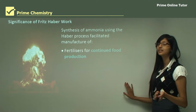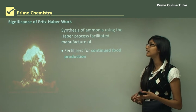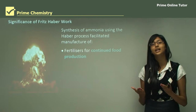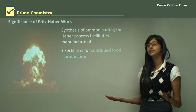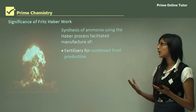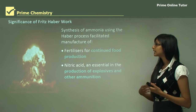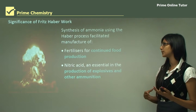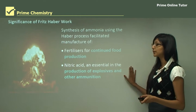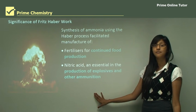The significance of Fritz Haber's work: the synthesis of ammonia using the Haber process facilitated the manufacture of fertilizers for continued food production, helping to overcome the problem of the increasing world population. Nitric acid, which was essential in the production of explosives and other ammunition, was also important as Germany was going through a war at that time.